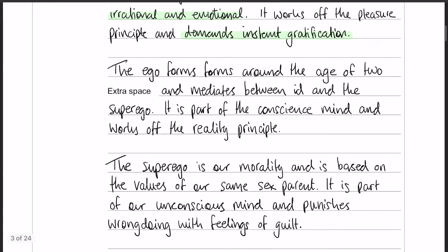Moving on — the second part is the ego. It forms around the age of two years old. Its job is to mediate between the id and the superego, and it works off the reality principle. I did put in that it's part of the conscious mind rather than the unconscious mind, though I'm doing a little bit of a mix-and-match of details for the different parts.